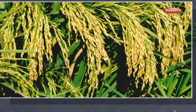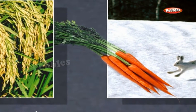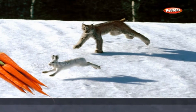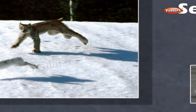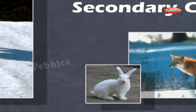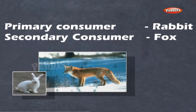Consumers depend directly or indirectly on the producers for food. They are mostly animals and are also called heterotrophs. Depending on the food they eat, consumers are put into various categories.